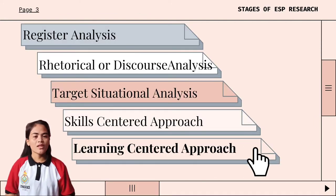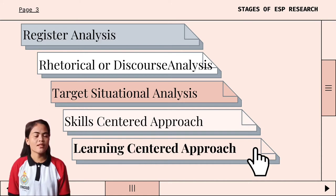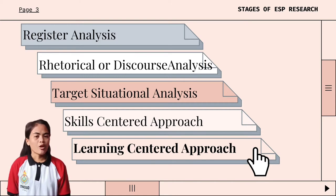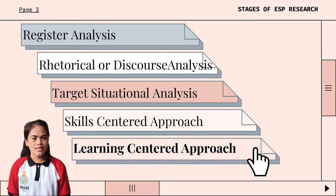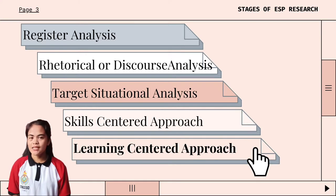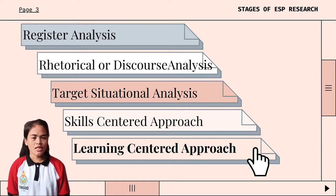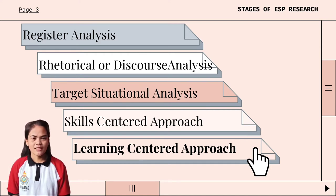ESP has witnessed five main phases of development, which are: register analysis, rhetorical analysis or discourse analysis, target situational analysis, skills-centered approach, learning-centered approach, and genre analysis.